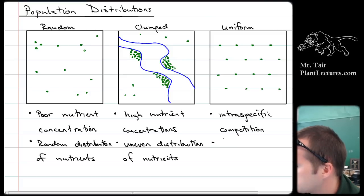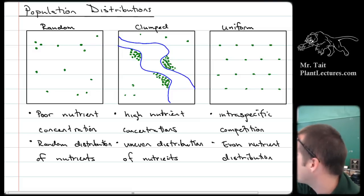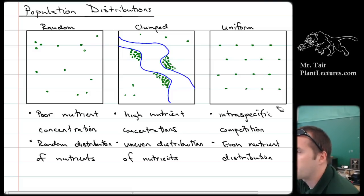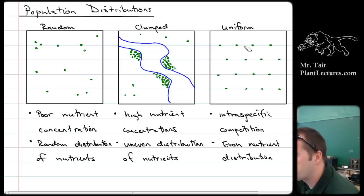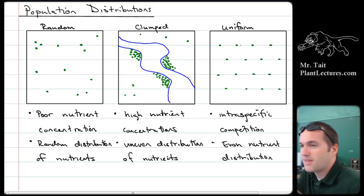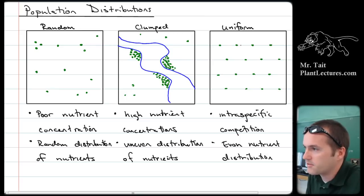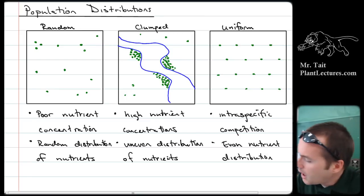For uniform distribution there needs to be a fairly even distribution of nutrients. It doesn't have to be perfectly even, but organisms must survive in surrounding areas. A territorial animal like a bear protects its specific area — the most dominant bear gets the best territory, maybe with a river running through it full of trout.